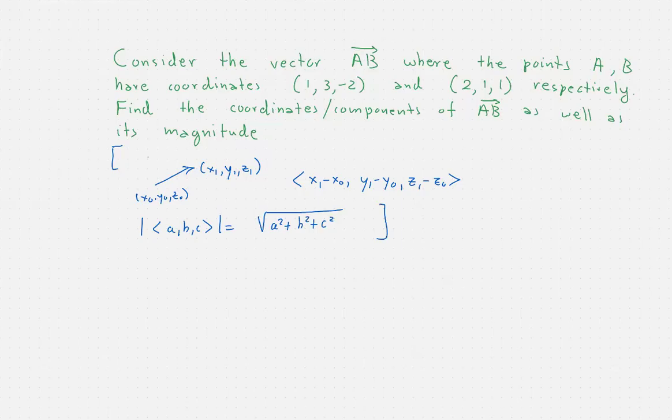So first of all, what is our vector? Our vector will have coordinates two minus one, one minus three, and one minus negative two. And of course, if we do these subtractions, we will get one, negative two, and three.